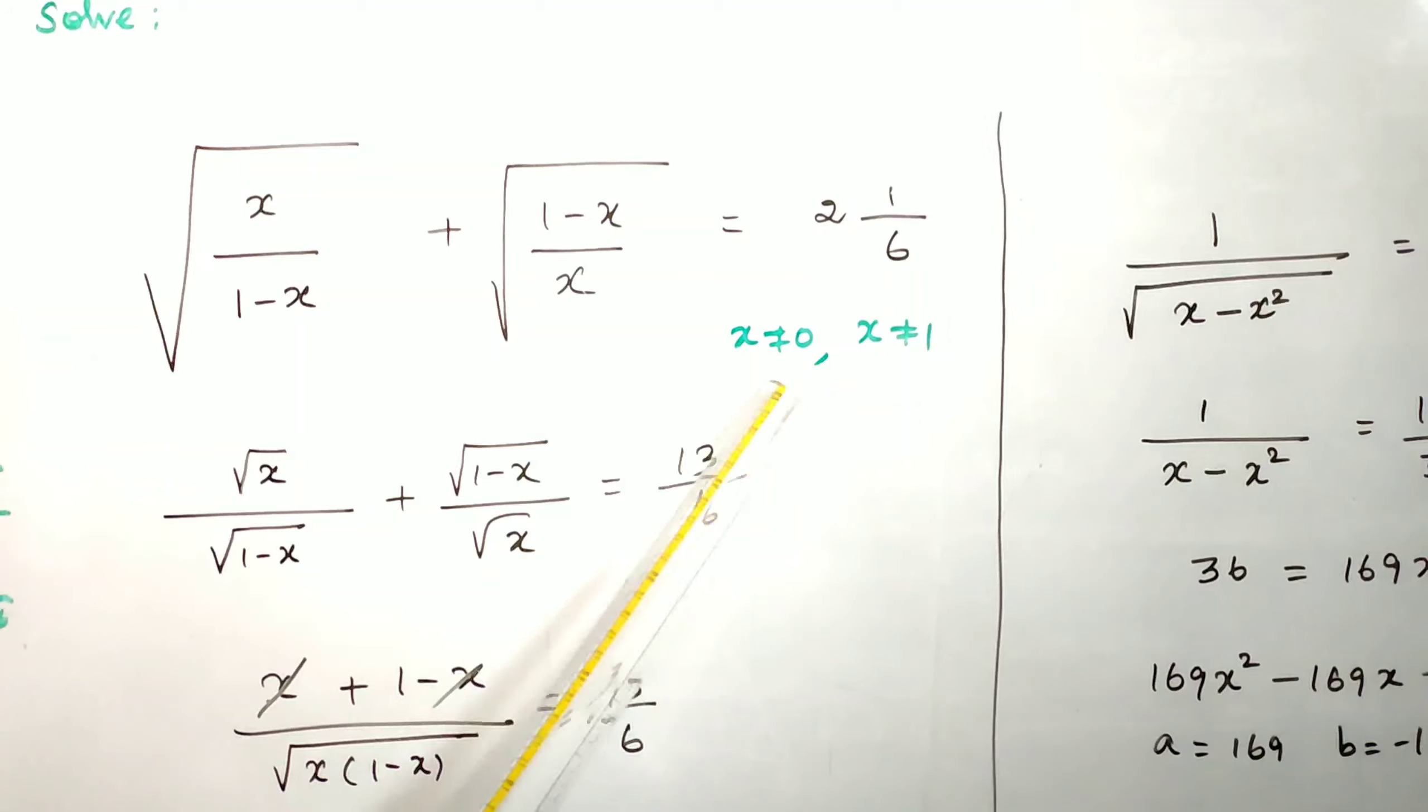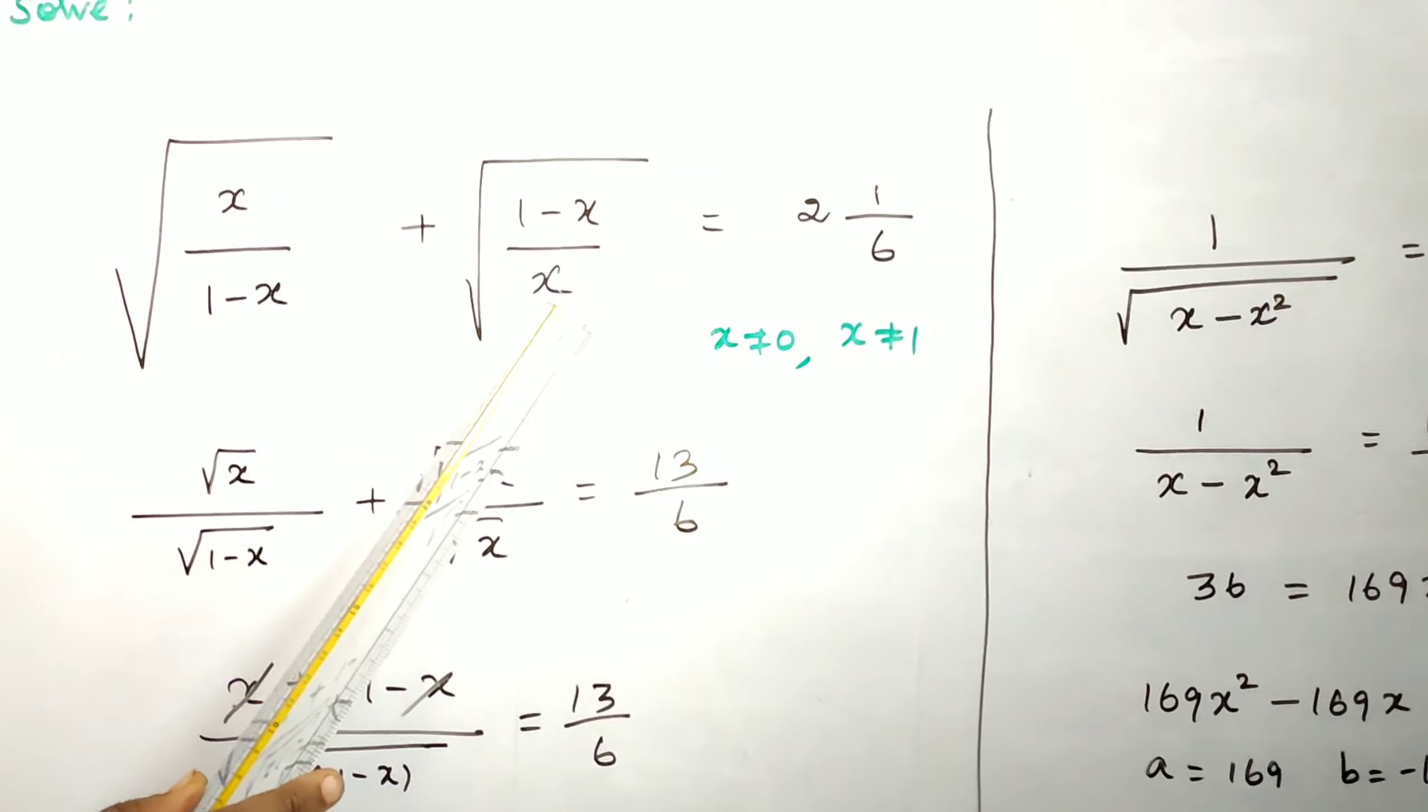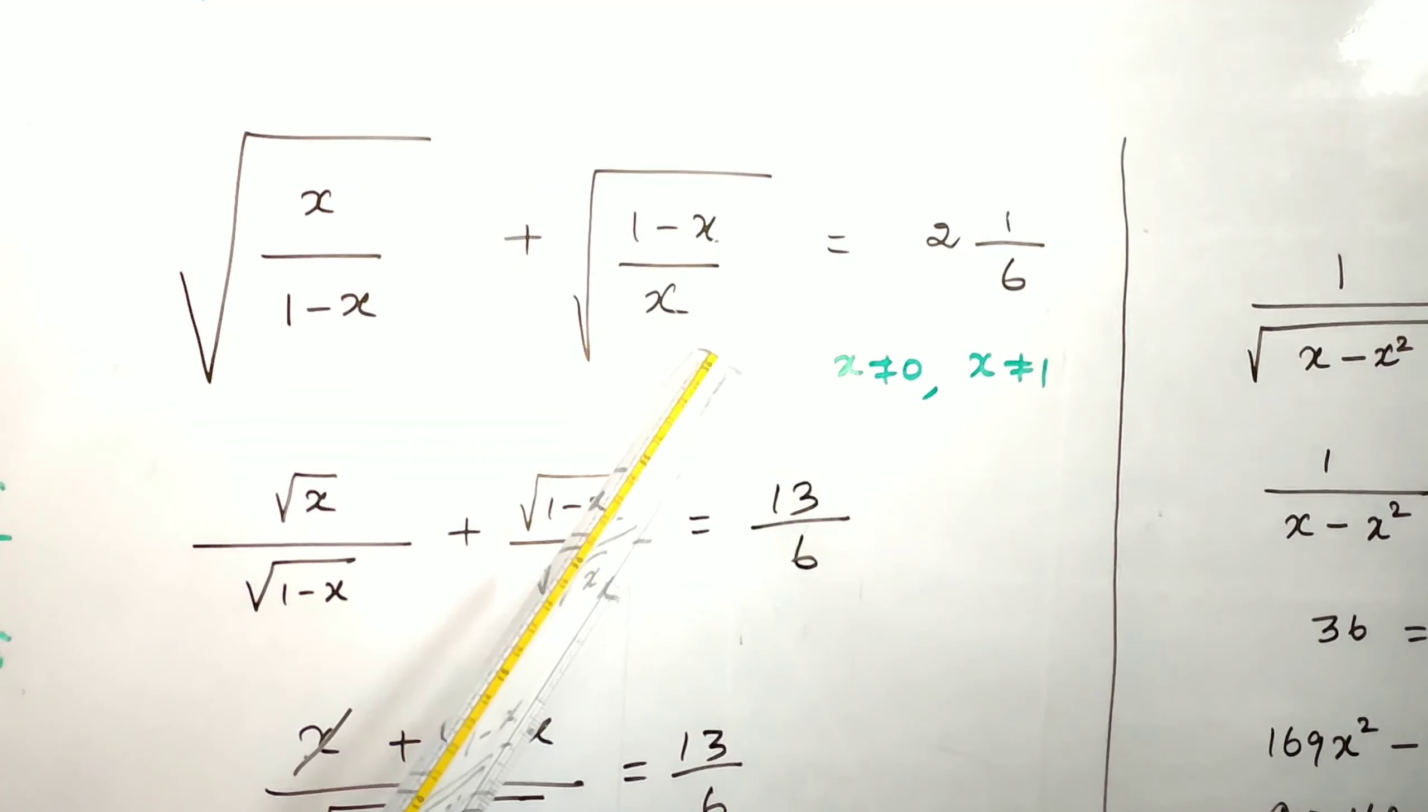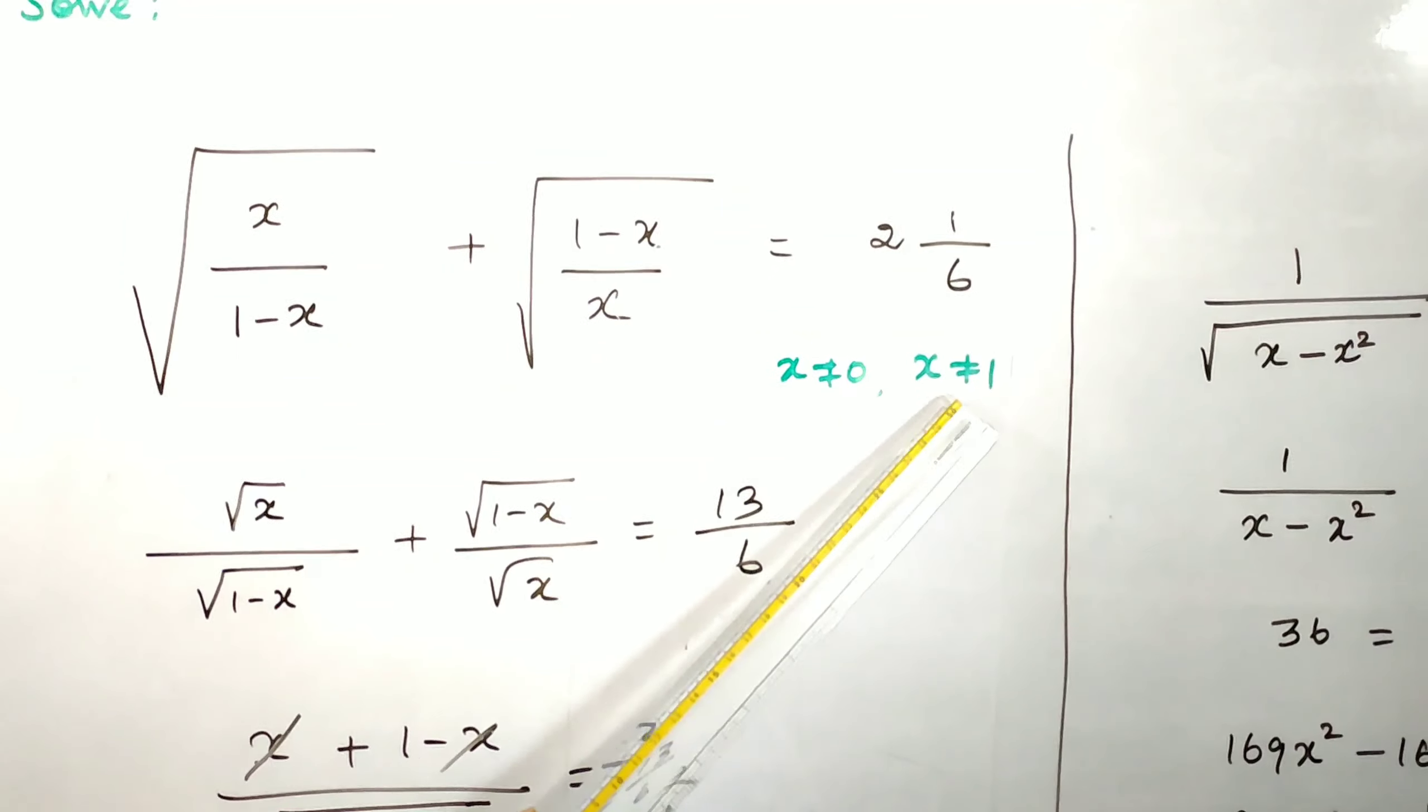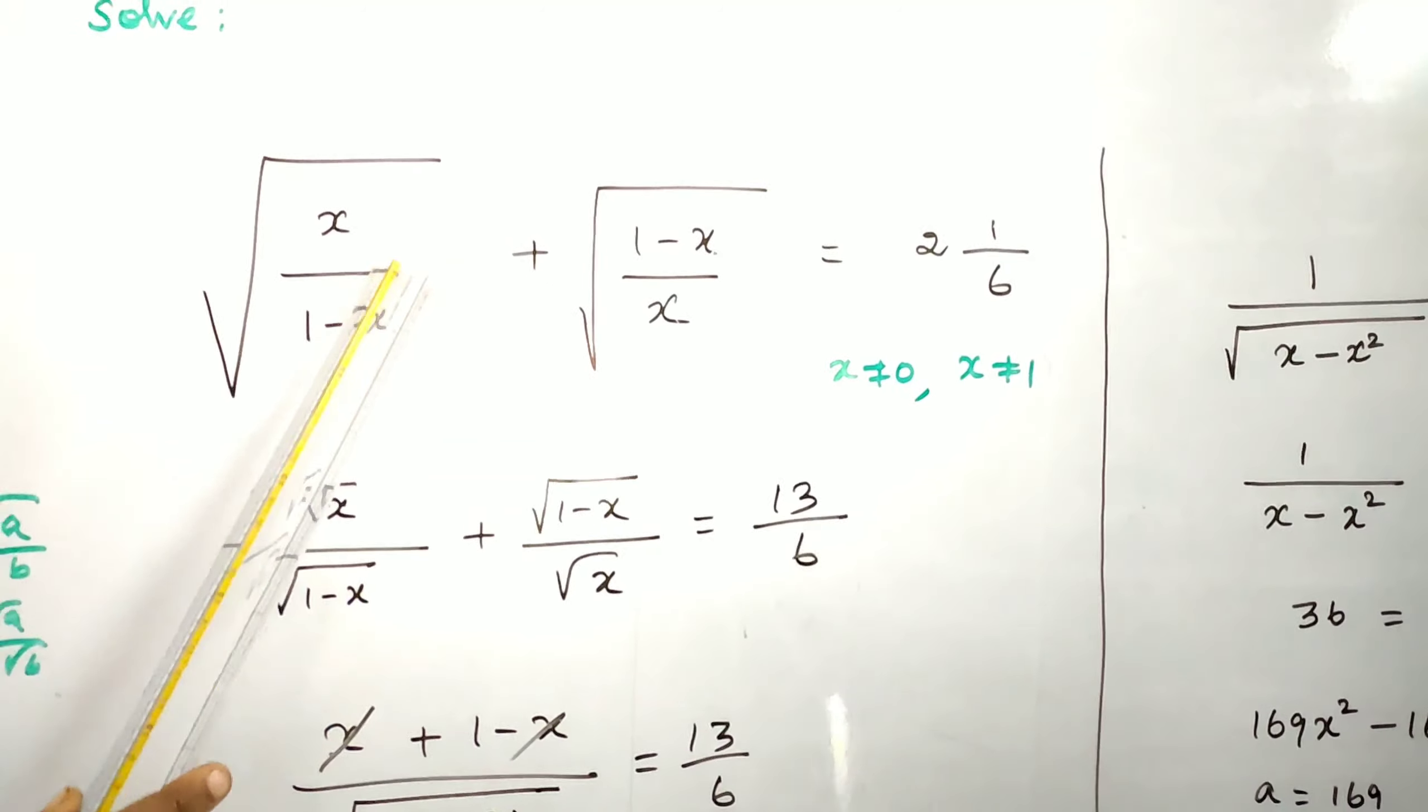Why did they give this condition? If x equals 0, then anything by 0 is not defined. The denominator always should not be 0. If x equals 1, then here it becomes 0, so anything by 0 is not defined. In real numbers these two values must be excluded.